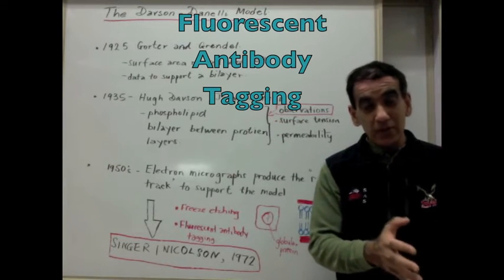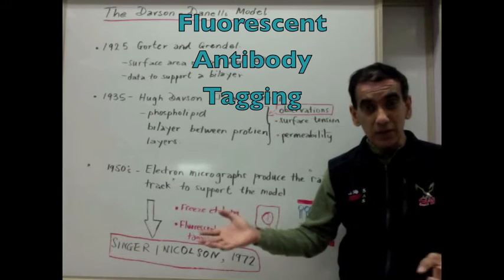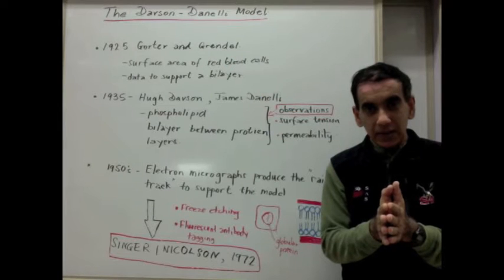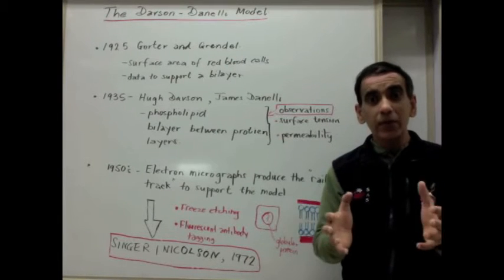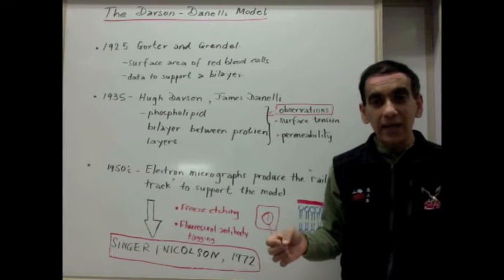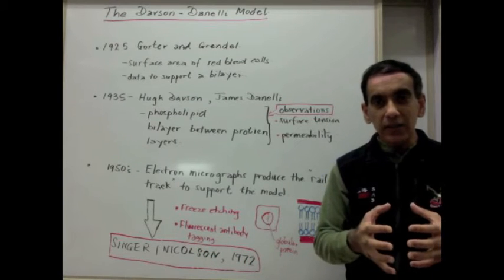Putting a tag on the membrane proteins of a mouse cell and putting tags on the membrane proteins of human cells, then fusing these cells together and observing whether the proteins remain distinct or whether they mix. The evidence demonstrated that red tags from mice and green tags from humans mixed evenly in time.